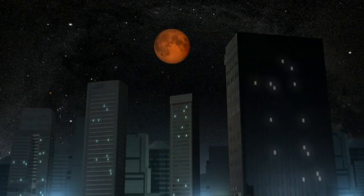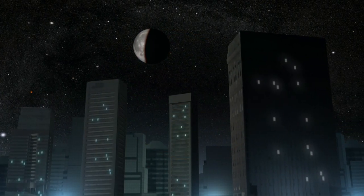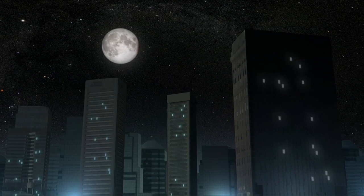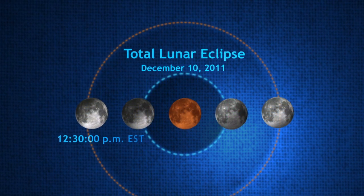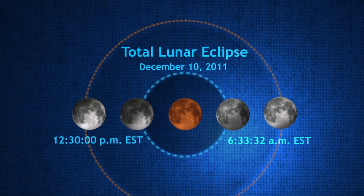As the eclipse ends, the Moon leaves the umbra, returns to its normal color, and then leaves the penumbra, brightening and resuming its original cycle. Overall, the whole process lasts only from a few minutes to a few hours, so you'll have to be quick if you want to see it.